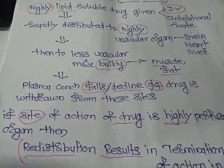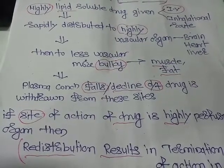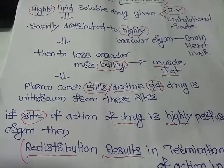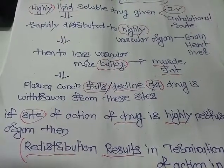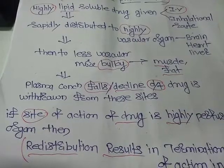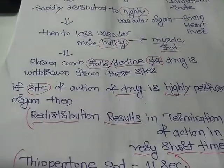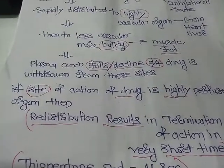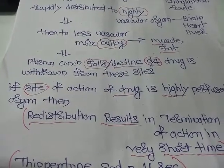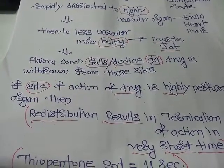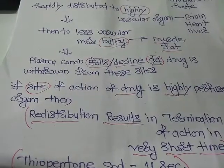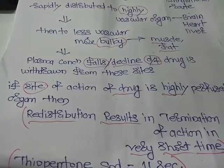The plasma concentration falls because the drug is withdrawn from these sites — withdrawn from the brain, heart, liver, and kidney. If the site of action of the drug is a highly perfused organ: in the case of thiopentone sodium, the site of action is the brain.